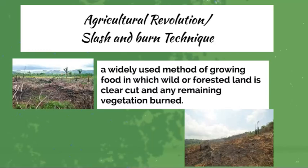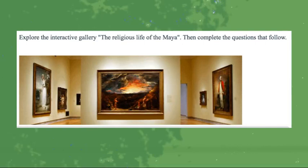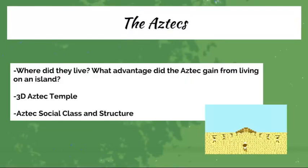When we move on to the Mayan civilization, we'll talk about the slash-and-burn technique — a method of growing food in which wild or forested land is clear-cut and remaining vegetation is burned. We'll look at its effectiveness and whether people still use it today. We'll also explore the interactive gallery for the religious life of the Mayans and complete the follow-up questions on Savas. For the Aztecs, we'll look at where they lived, what advantage they gained from living on an island, explore the 3D Aztec temple with a coloring and labeling sheet, and use a pyramid structure to summarize the social class hierarchy and the roles and responsibilities of different societal members.